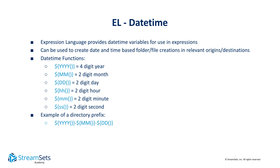There are also date-time convenience functions to provide current date-time elements from current year to current second. These are useful for constructing directory names.